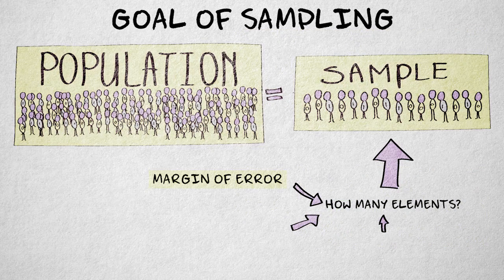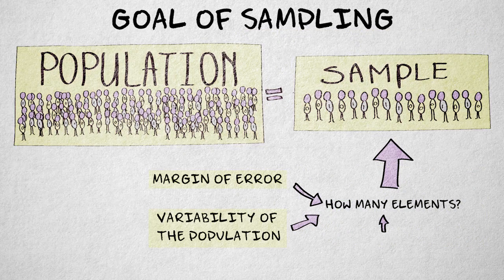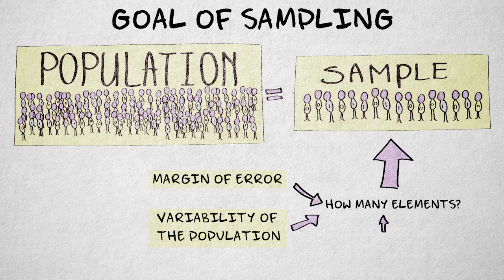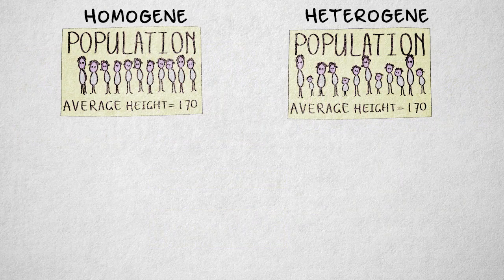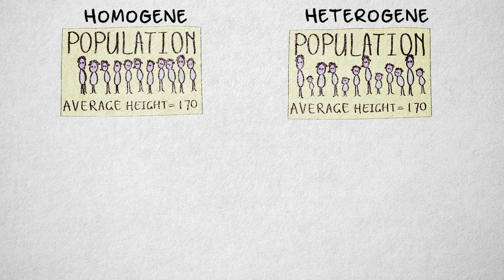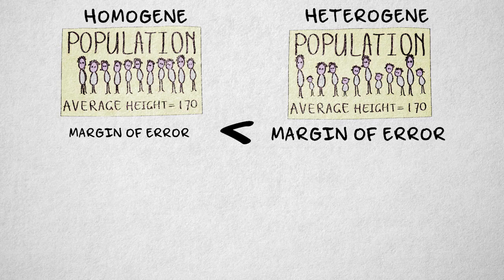Of course, there are other factors to consider when deciding on sample size. The variability of the population is an important factor. Heterogeneity, or strong variation in the population on the property of interest, results in a larger margin of error, all other things being equal.